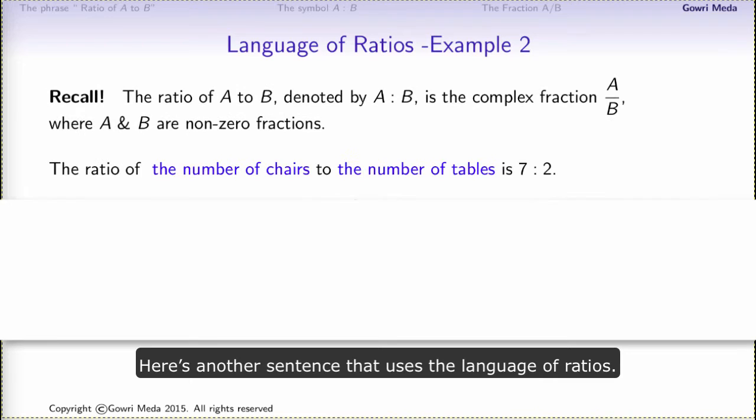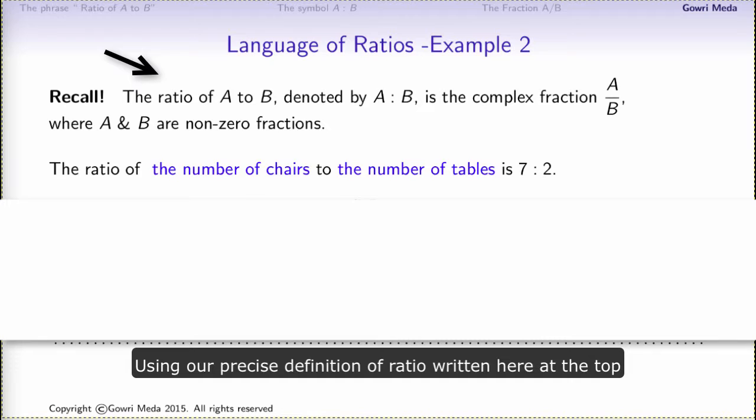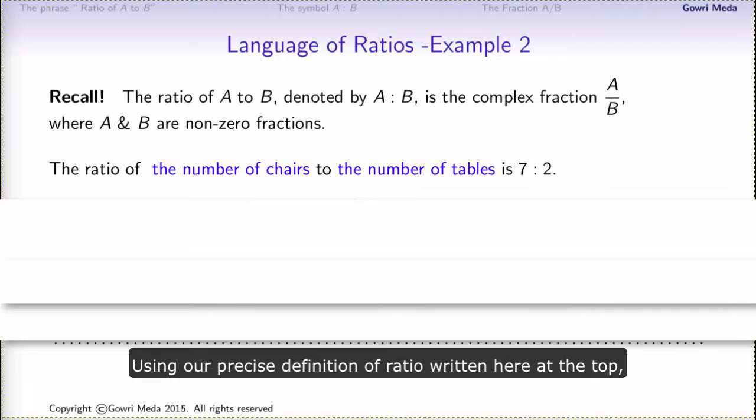Here is another sentence that uses the language of ratios. The ratio of the number of chairs to the number of tables is 7 to 2. Using the precise definition of ratio written here at the top, we can translate this English sentence into a math equation.